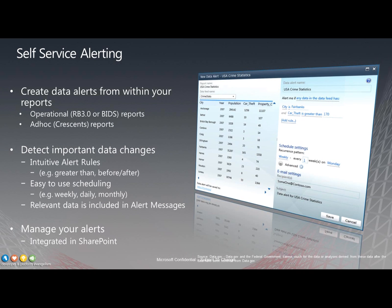We're going to start this presentation with what's new in reporting services. It's not a whole lot new, but one notable feature is self-service alerting. This allows us, in SharePoint integrated mode, to build alerts on certain items. As a developer you can decide to make the gross profit margin an alertable object, so people can say if the gross profit falls below a certain level, send me an email alerting me of that number. That's a new reporting services feature.